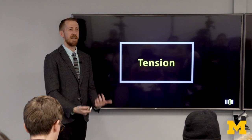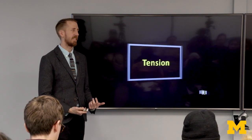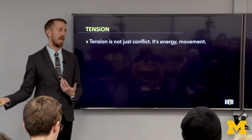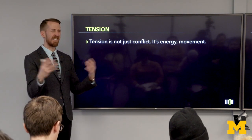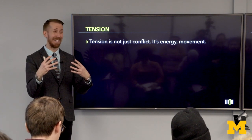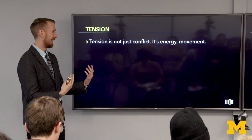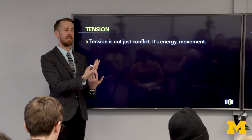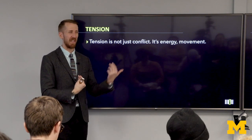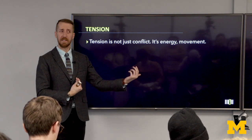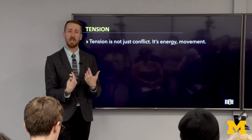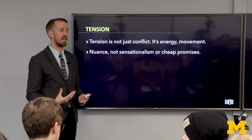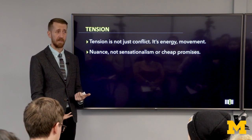Tension is what moves the narrative forward. It's not just conflict. It's not just people yelling at each other like on Fox News or MSNBC — that's not tension, that's fighting, and that's cheap. Narrative tension is energy, it's movement, it's the difference between what your audience knows and what they want to know, what they think is coming. It could be tension of the situation your character is in at the moment. I want you to think about tension as nuance, not as sensationalism.